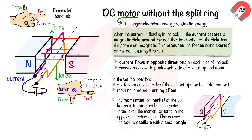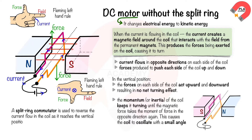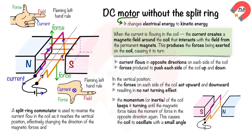To prevent this and ensure continuous rotation in one direction, a split ring commutator is used. This device reverses the current flow in the coil as it reaches the vertical position, effectively changing the direction of the magnetic forces and pushing the coil to continue rotating.